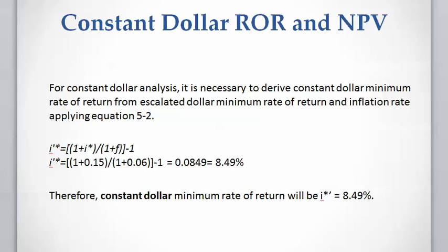We can use the Fisher equation to convert the escalated dollar minimum rate of return into the constant dollar minimum rate of return using the inflation rate. With 15% as the escalated dollar minimum rate of return and 6% inflation rate, the Fisher equation gives 8.49% as the constant dollar minimum rate of return. This is the rate we must use when calculating the constant dollar NPV.